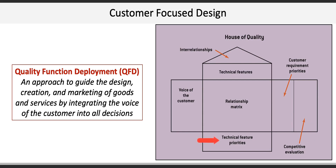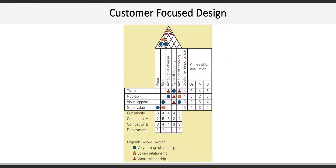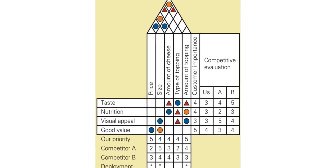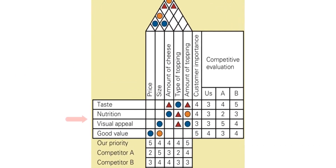At the bottom, technical features are prioritized and compared to how major competitors prioritize the same features. For example, should we emphasize size in our development when our major competitor prioritizes price? Here's an example of a completed house of quality for a pizza. Listening to the voice of the customer has identified four key requirements they're looking for in a pizza.